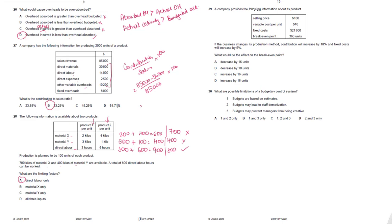Question 29. A company considers changing its production method — contribution increases by 10% and fixed costs increase by 5%. Current contribution per unit is $60; revised = $66. Current fixed costs $21,600 × 1.05 = $22,680. Revised breakeven = $22,680 ÷ $66 = 344 units. Existing breakeven is 360 units. The breakeven decreases by 16 units. Answer: 29A.